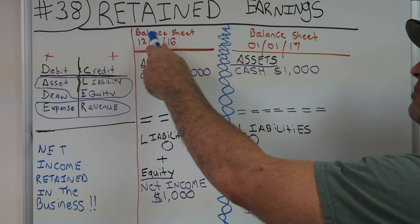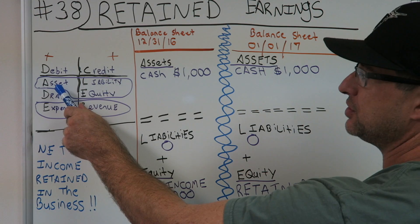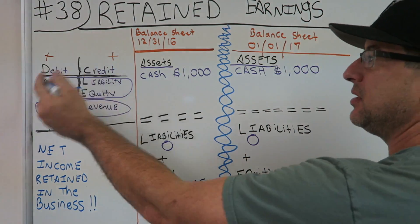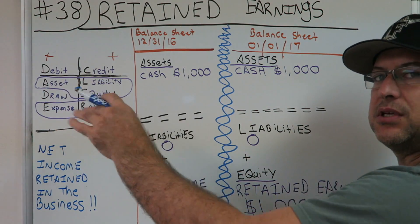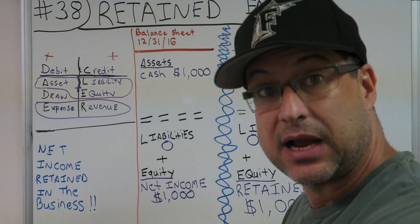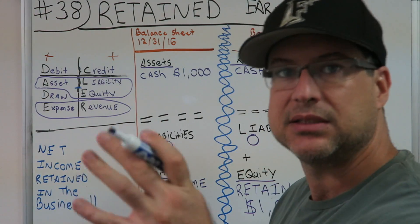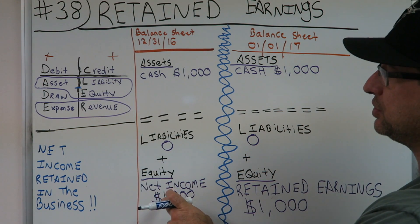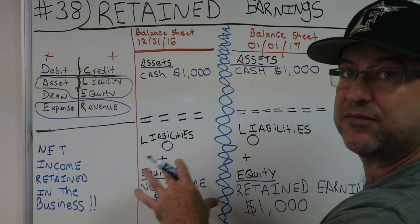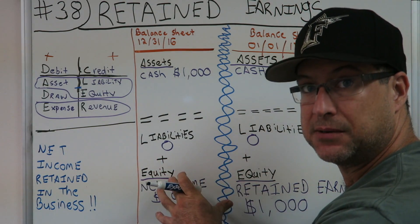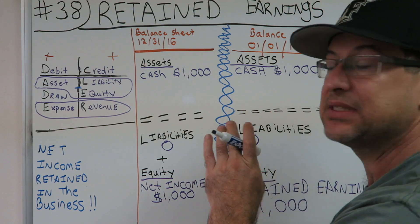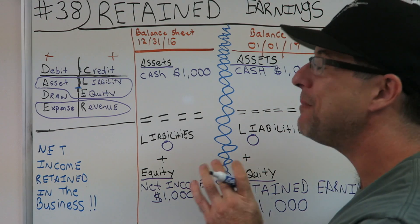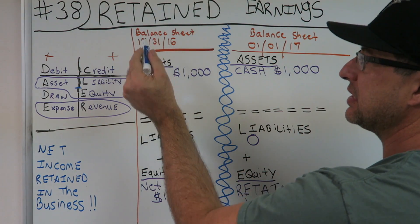Let's do the retained earnings balance sheet at 12/31. The balance sheet is: assets equal liabilities plus equity. Everything equals — that's one of the things I love about accounting, you can always check your work. This is the balance sheet at the end of AFB 37, dated 12/31/16, the last day of the year.